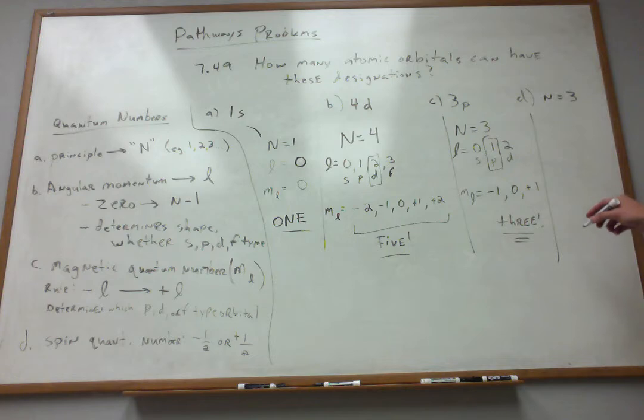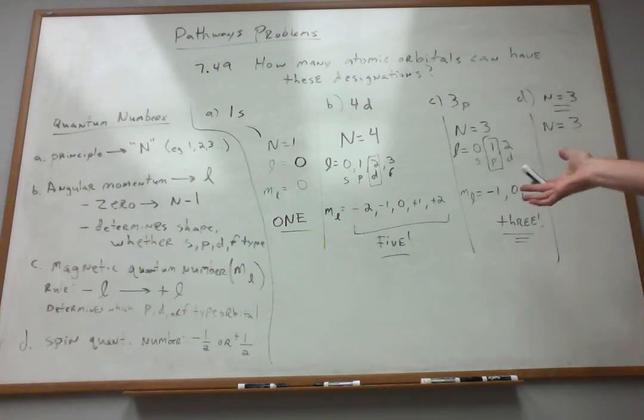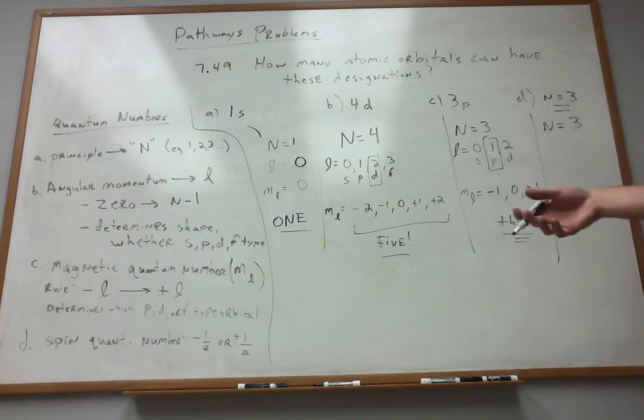And then lastly, we have n equals 3. Now, this one's different, because notice they just give us what? The principal number. So n is equal to 3. So they want us to consider all possibilities when n is equal to 3, or the principal quantum number is 3.